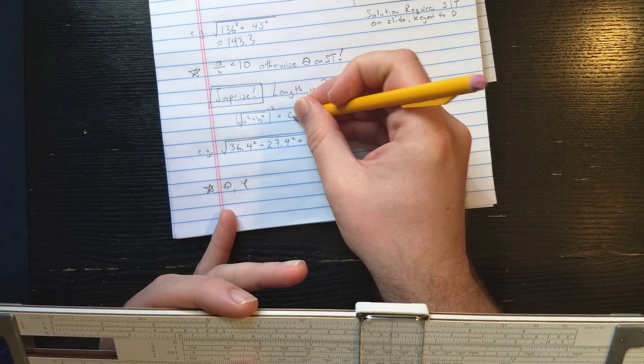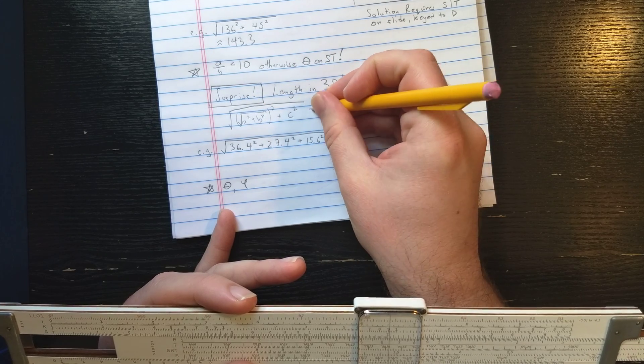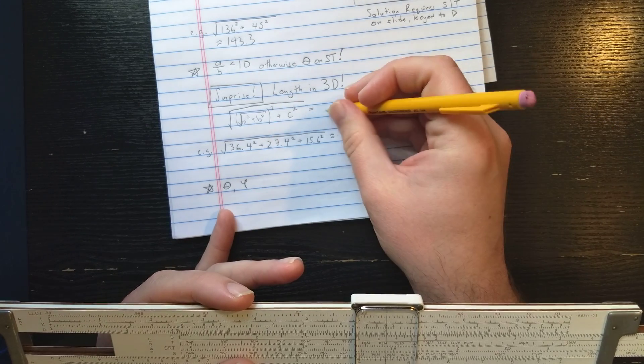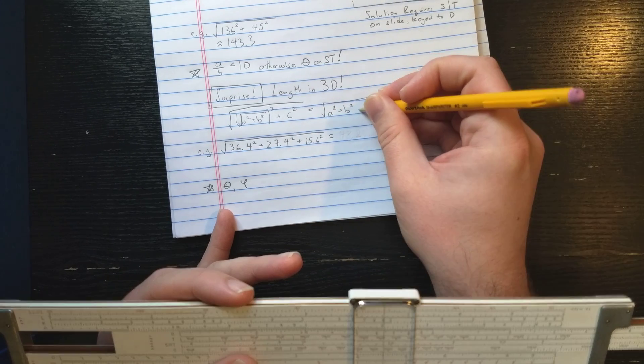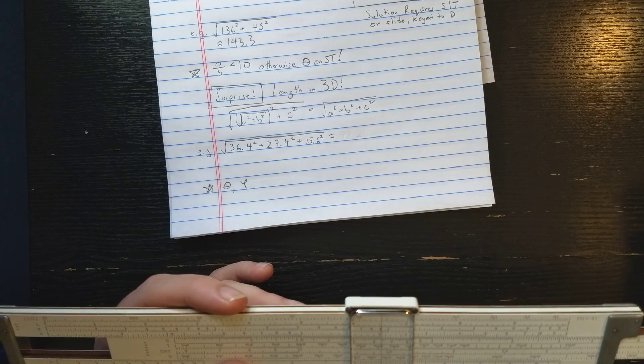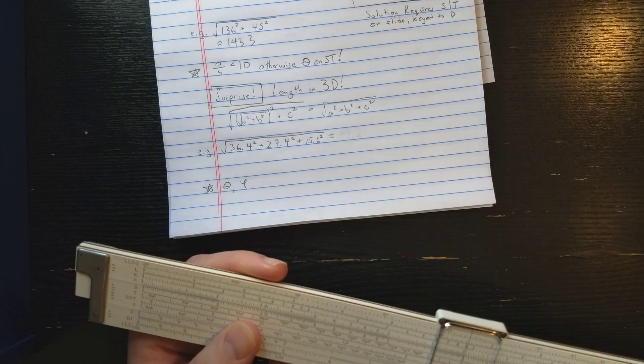Then you're going to have a third number squared. And then you're going to take the square root of that by chaining. But if you simplify this, you see that when you chain, you just compute A square plus B square plus C square, which is exactly what we need to compute length of a three-dimensional vector or distance in three dimensions.